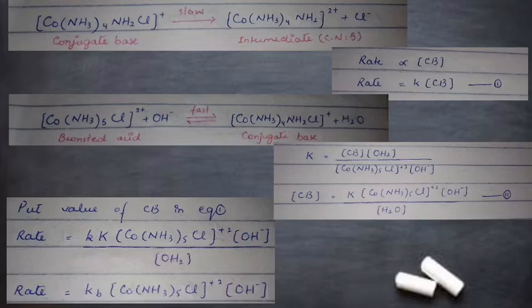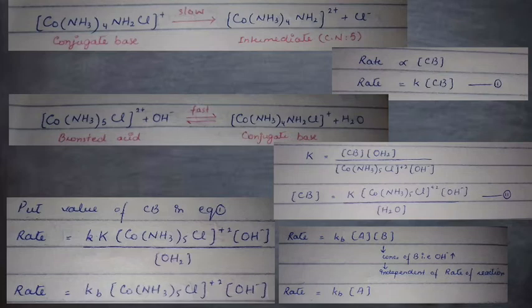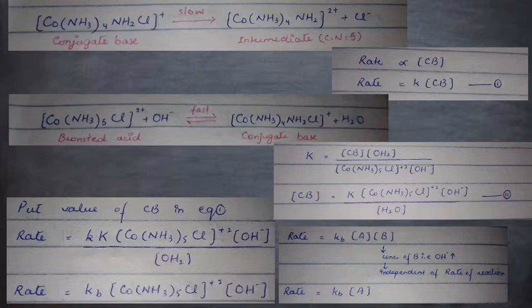The rate equation can be written simply as: rate = K_B × [A] × [B], which appears to be a second-order reaction. However, SN1CB mechanism gives a first-order reaction. This occurs when the concentration of B (hydroxyl ion) is much greater than that of the complex A, so the rate no longer depends on [B]. Therefore, rate = K_B × [A], confirming it is a first-order reaction consistent with the SN1CB mechanism.